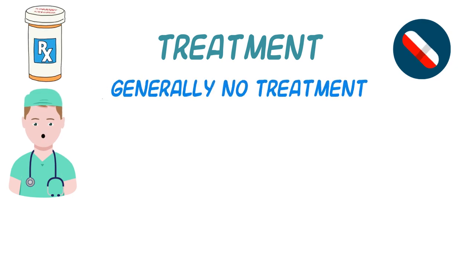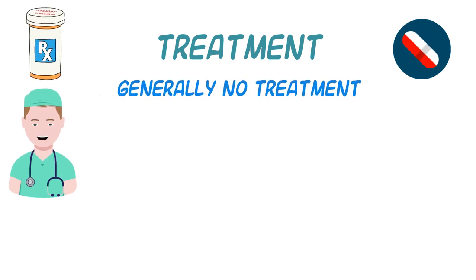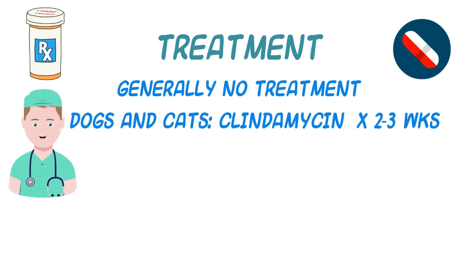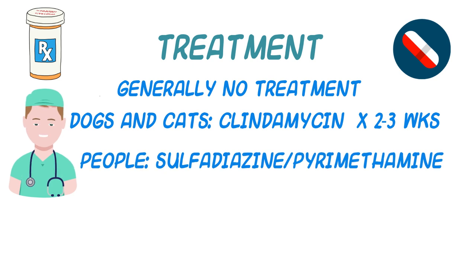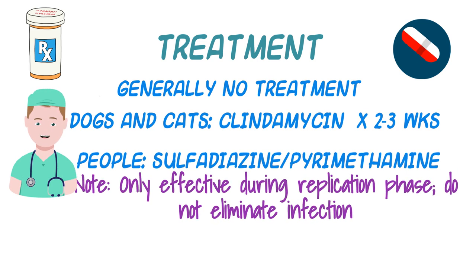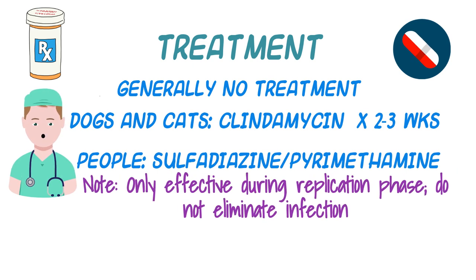Generally, animals are not treated for toxo, but in dogs and cats, clindamycin for two to three weeks is the drug of choice. For human patients, a common recommendation is sulfadiazine and pyrimethamine. However, these drugs are active during parasite replication and do not eliminate the infection.